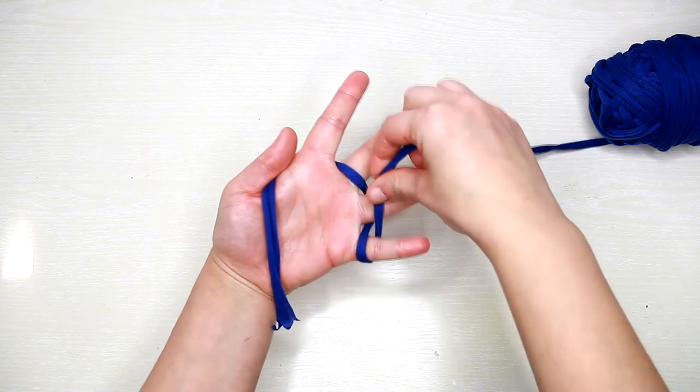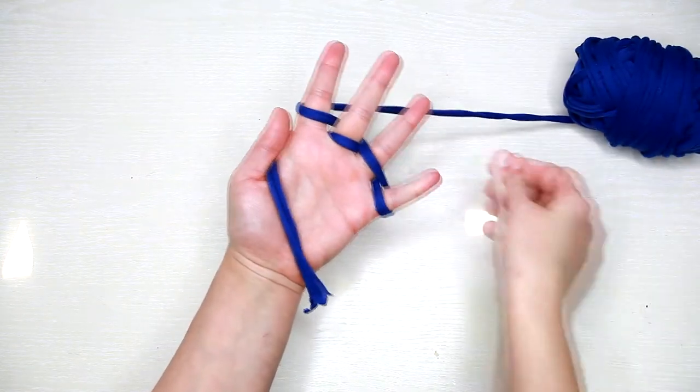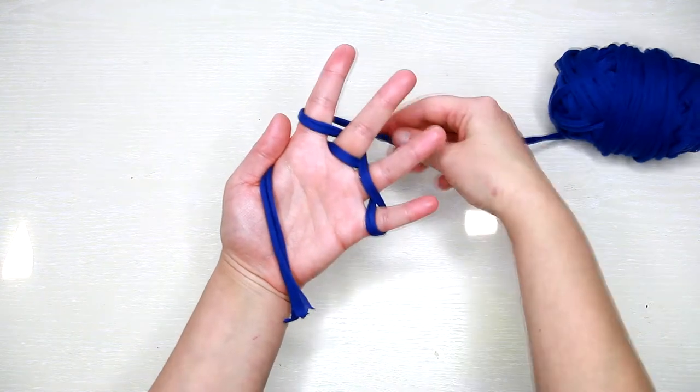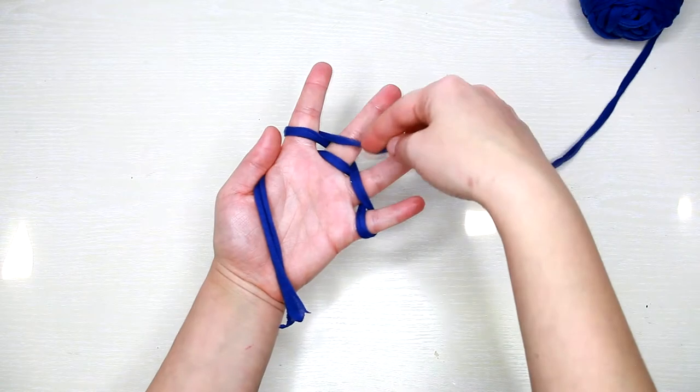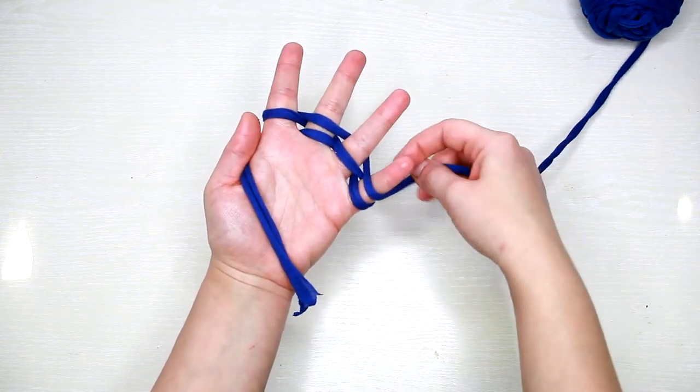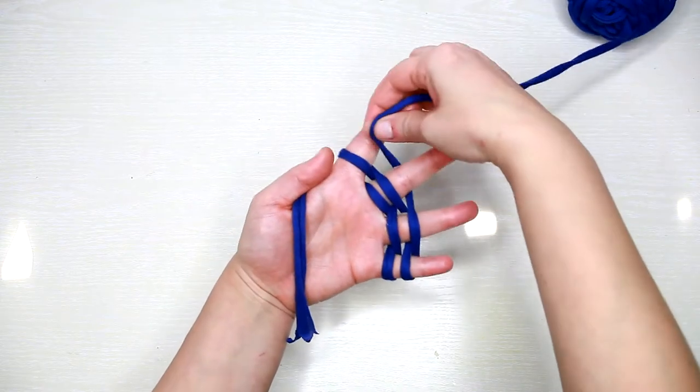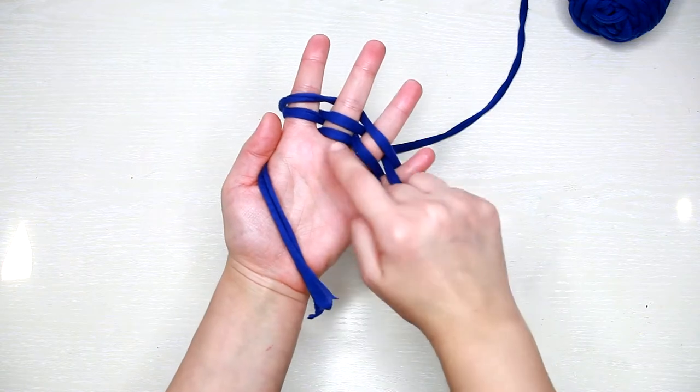Then wrap the yarn around under your pinky, over your ring finger, under your middle finger, and over your index finger. Then over, under, over - go around again. Then over, under, and over. You need to have two loops on each finger in order to create the stitches.